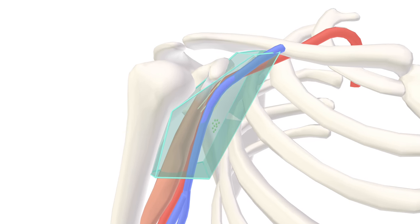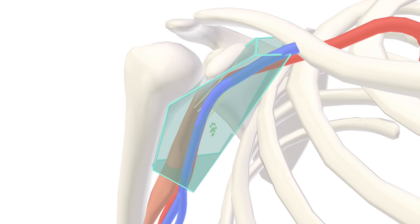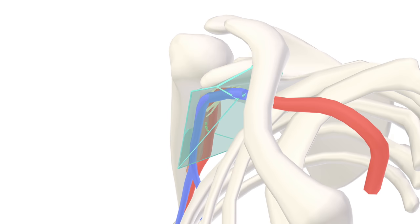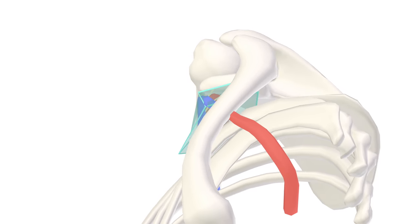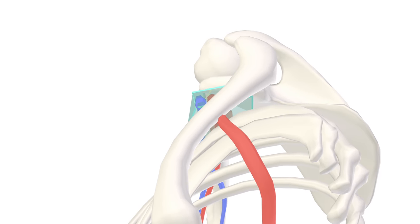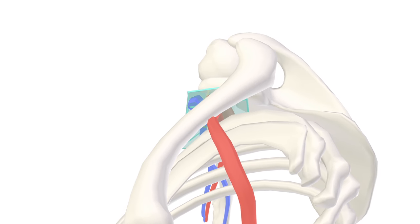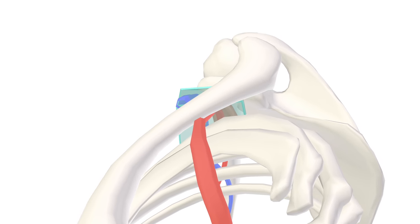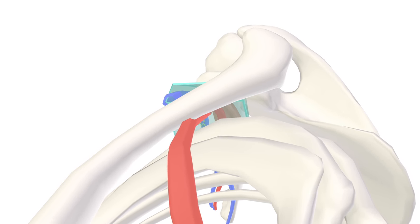Now that we've discussed the boundaries and contents of the axilla, let's take a short tour through it. We'll begin at the subclavian artery, which becomes known as the axillary artery once it is passed by the first rib.